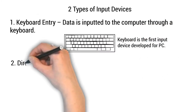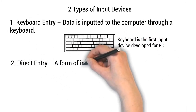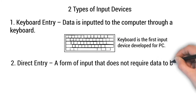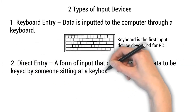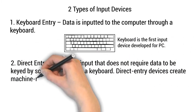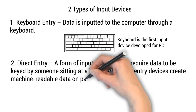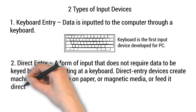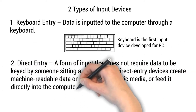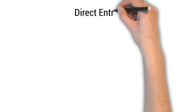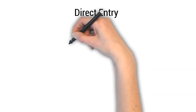Direct Entry is a form of input that does not require data to be keyed by someone sitting at a keyboard. Direct Entry devices create machine-readable data on paper or magnetic media, or feed it directly into the computer's CPU. There are three categories of Direct Entry devices.